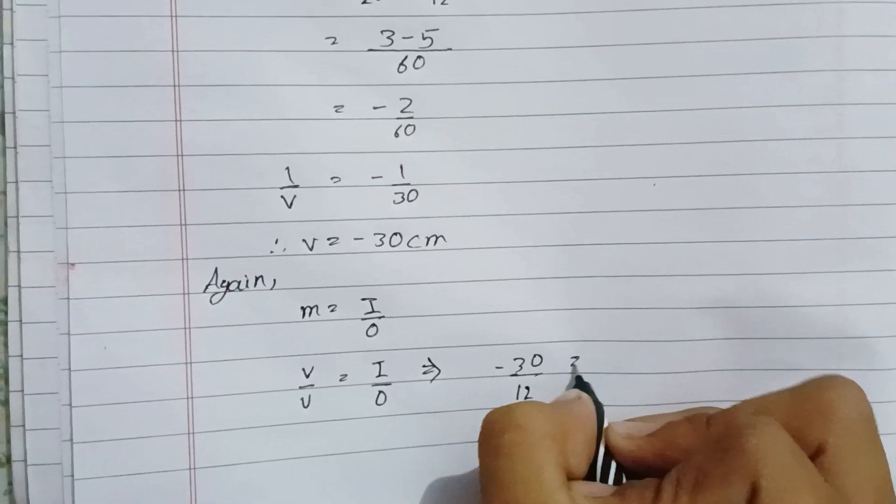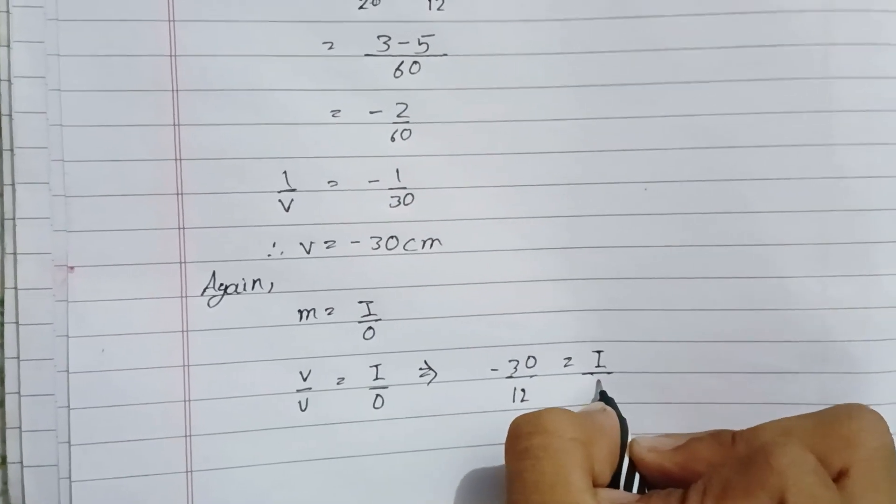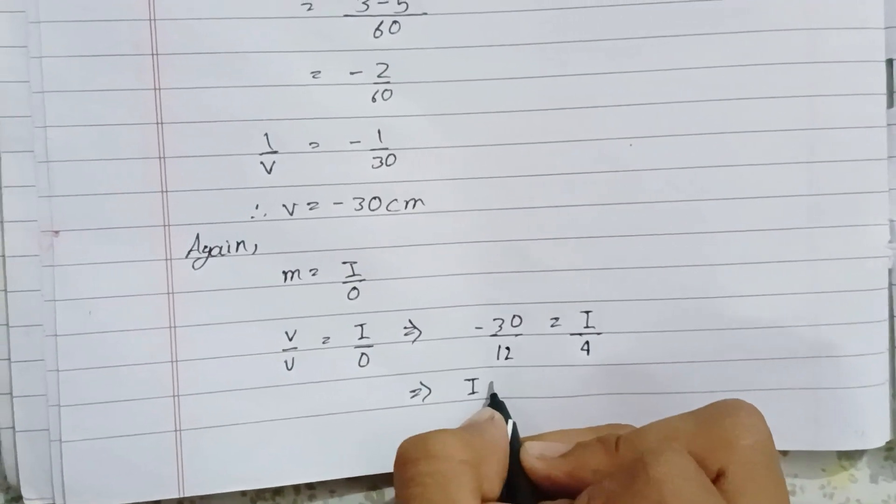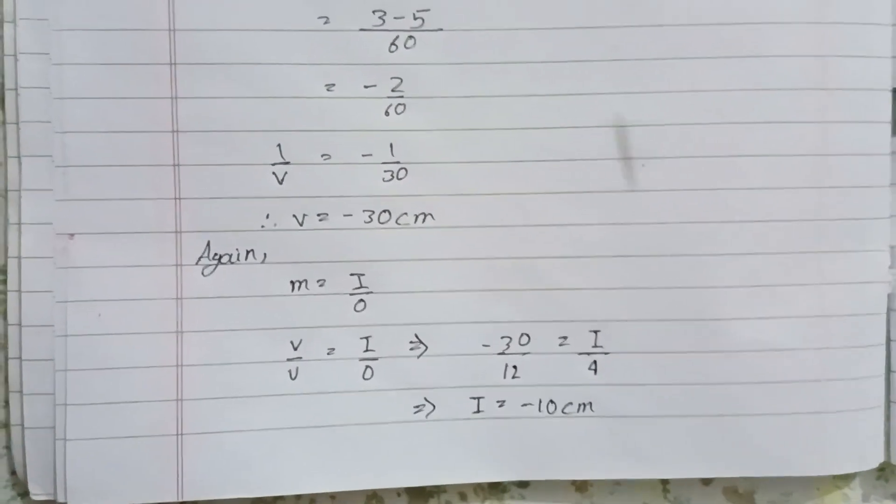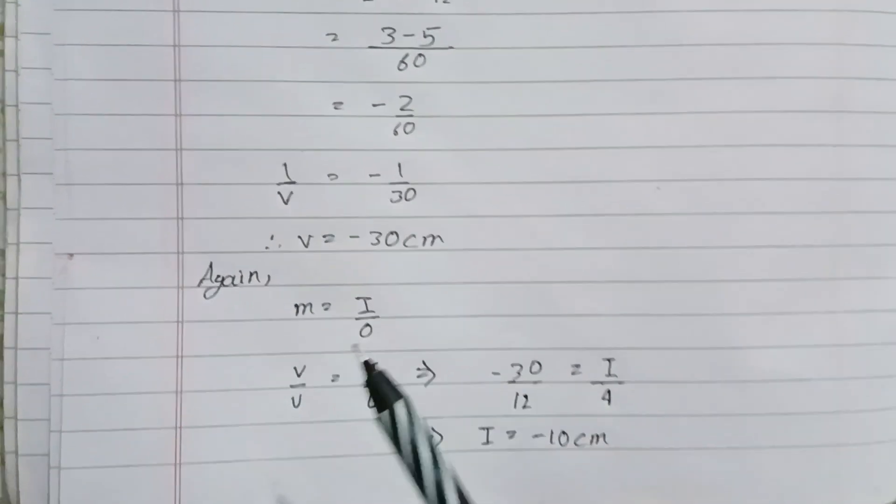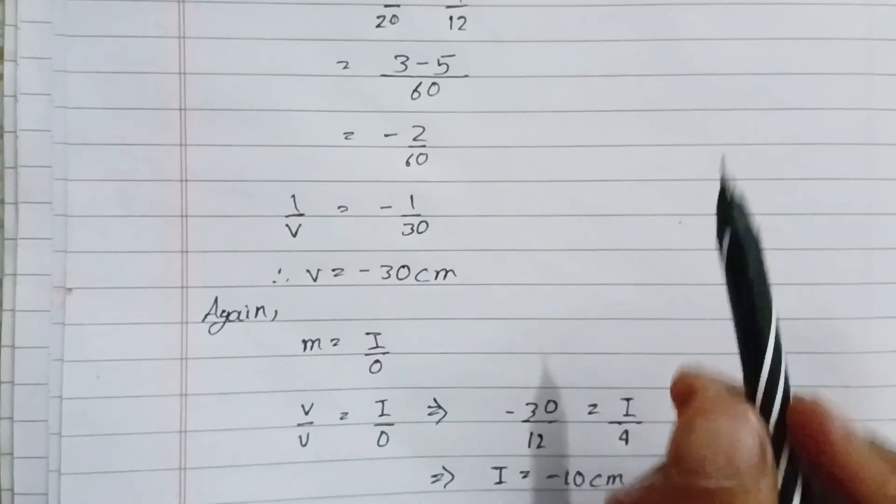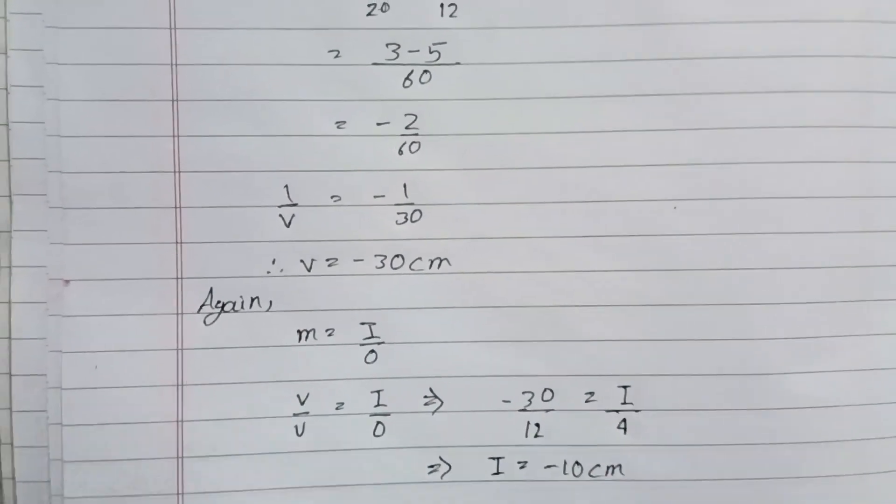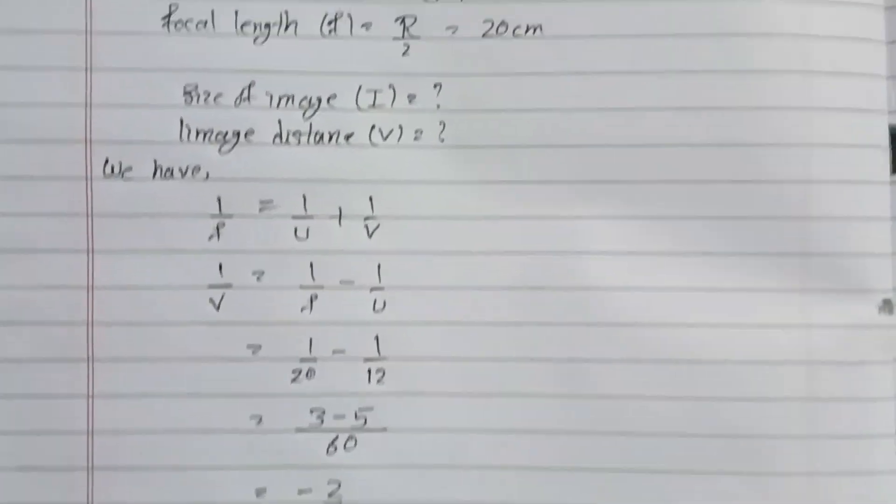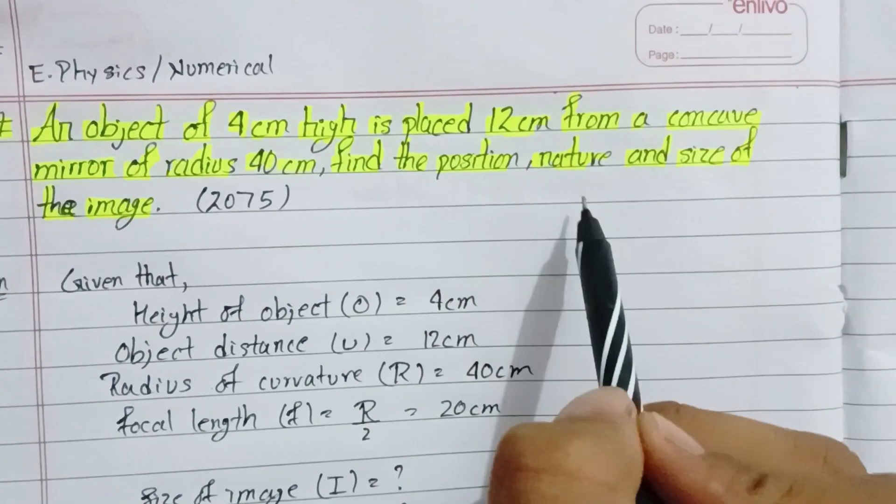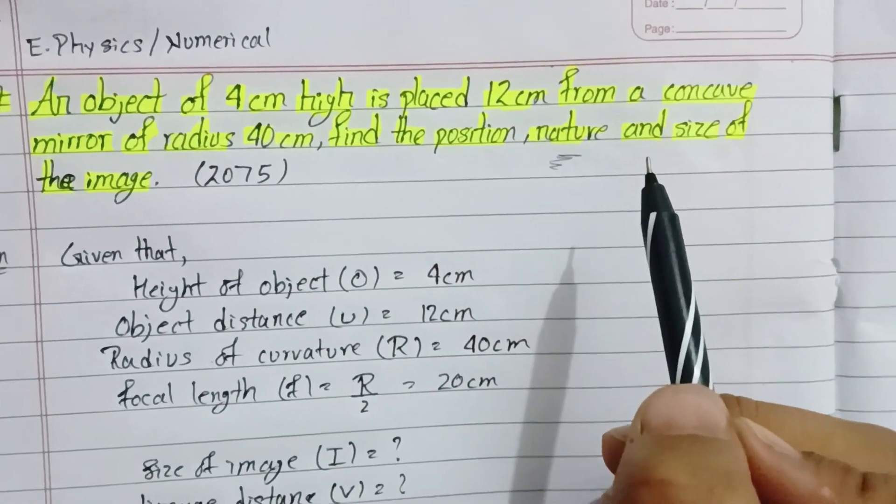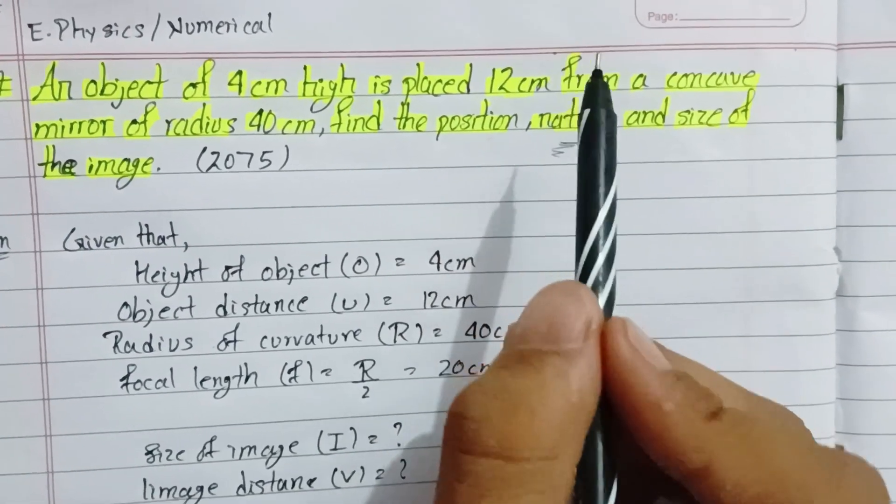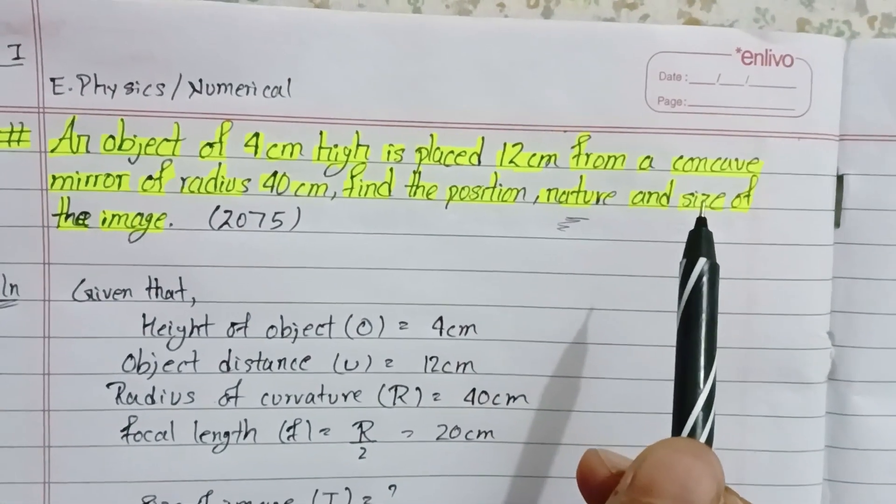Therefore I equals -10 centimeter. So the image size is -10 centimeter, image distance is -30 centimeter. The negative sign means the nature is real and inverted. This is the complete solution.